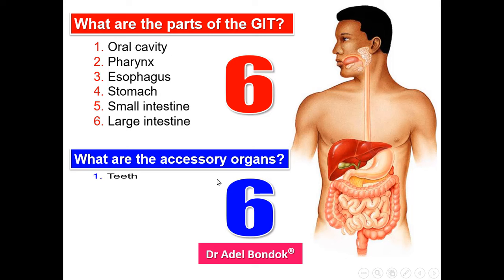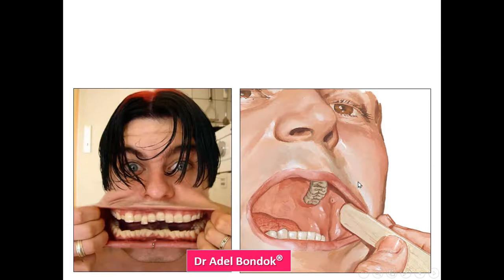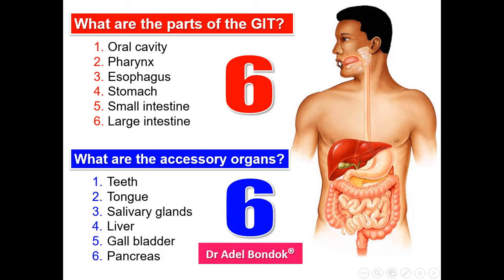The accessory organs are also six: teeth, tongue, salivary glands — which are three: parotid gland, submandibular gland, and sublingual salivary glands — liver, gallbladder, and pancreas.